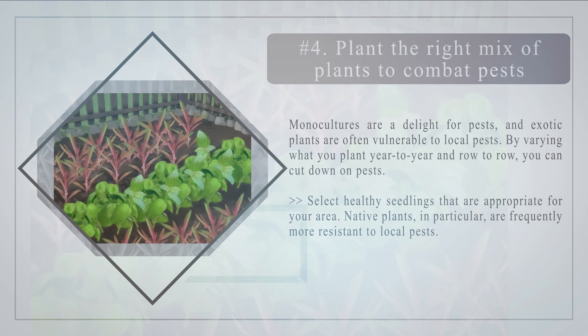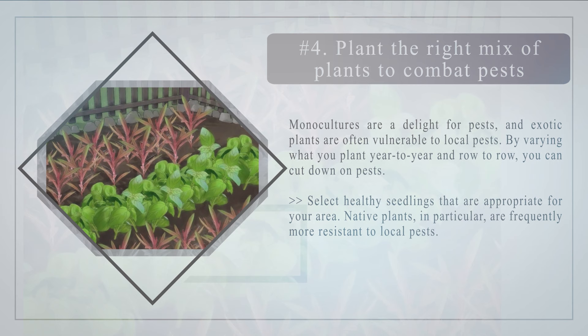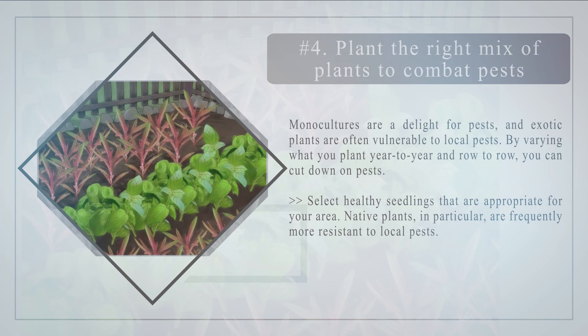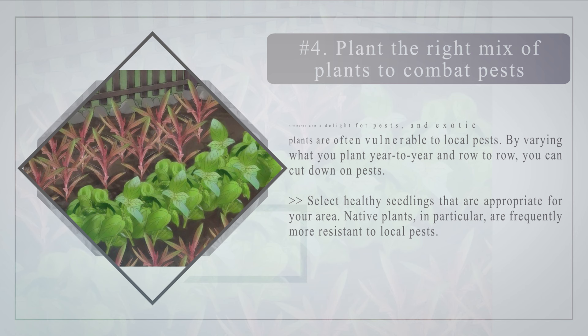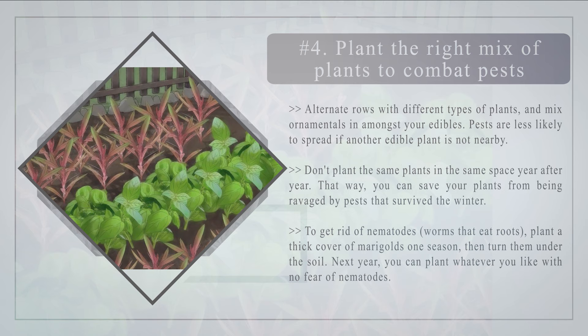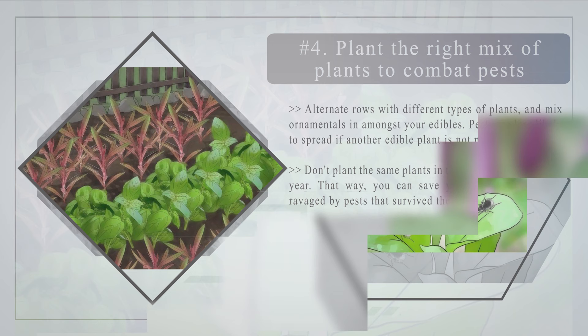Number four: plant the right mix of plants to combat pests. Monocultures are a delight for pests, and exotic plants are often vulnerable to local pests. By varying what you plant year to year and row to row, you can cut down on pests. Select healthy seedlings appropriate for your area — native plants are frequently more resistant to local pests. Alternate rows with different types of plants and mix ornamentals in amongst your edibles. Pests are less likely to spread if another edible plant is not nearby. Don't plant the same plants in the same space year after year. To get rid of nematodes — worms that eat roots — plant a thick cover of marigolds one season, then turn them under the soil; the next year you can plant whatever you like with no fear of nematodes.